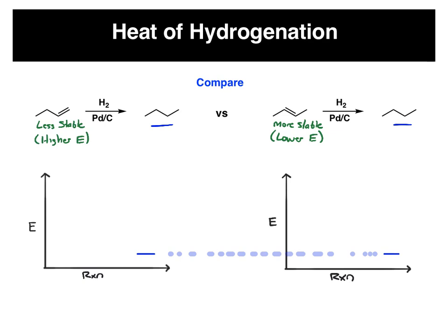So now, if we plot the starting material on our reaction coordinate, the less stable one, I'll put it right here, the more stable one should be at a lower energy. So I'm going to put that down just a little bit.